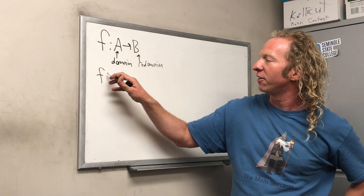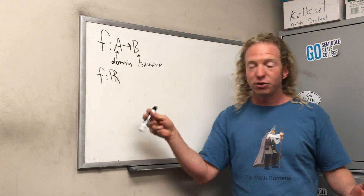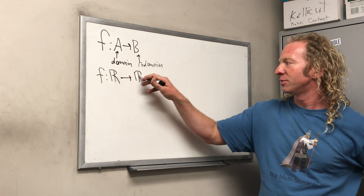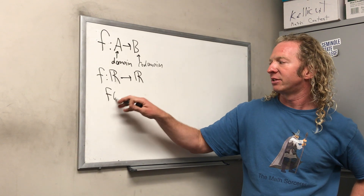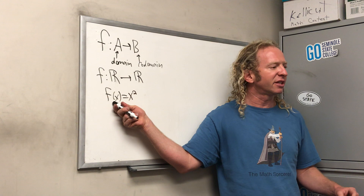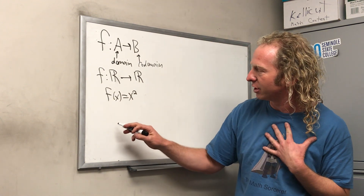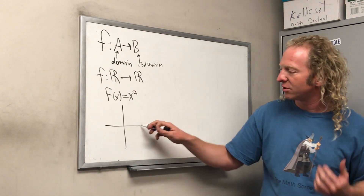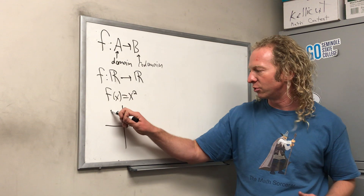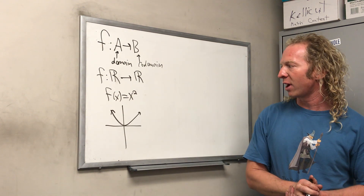For example, say we had a function f from the set of real numbers — that's ℝ — to the set of real numbers, and we define it by f(x) = x². This function takes x and squares it. Let's think about the graph of this function. What is the graph of x²? It's a parabola — it looks like a U.